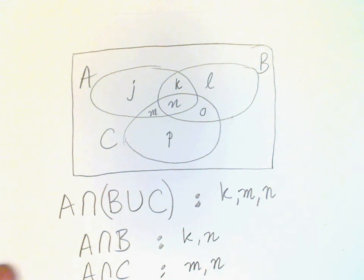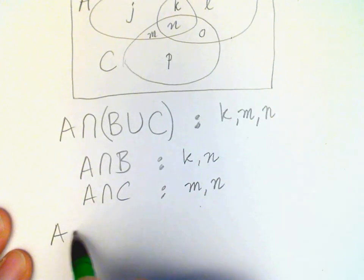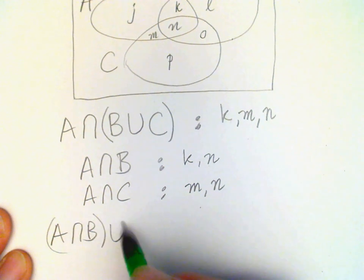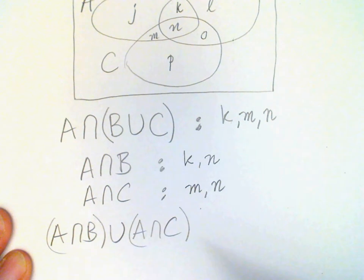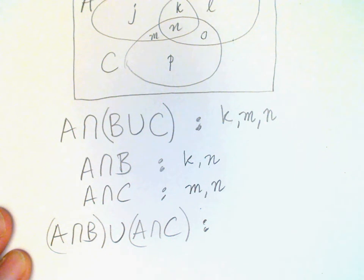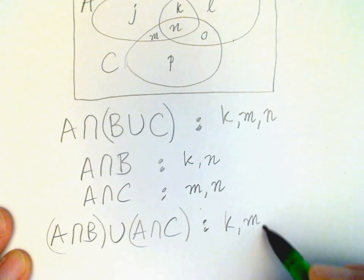And so finally we need to form the union of these two, A intersects B union A intersects C. And so we need all of the regions which are in the one or in the other or in both. And that would be K, M, and N.